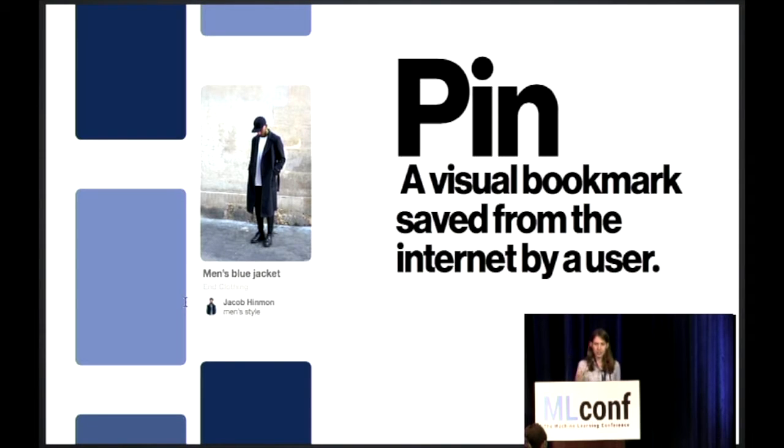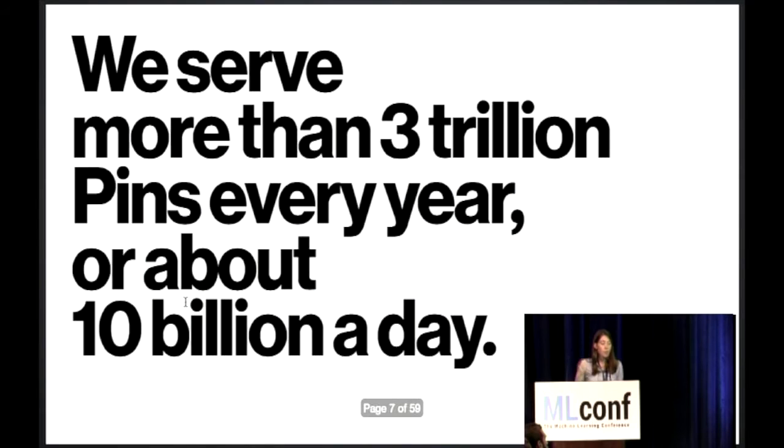So, I said we're a catalog of ideas. What does idea mean? Our unit of content is called a pin, and it is a visual bookmark that is saved from the internet by a user, and so this is a piece of content, basically. And then to give you an idea of the scale, we have 150 million monthly users, and we serve about 10 billion of these pins a day or 3 trillion every year.